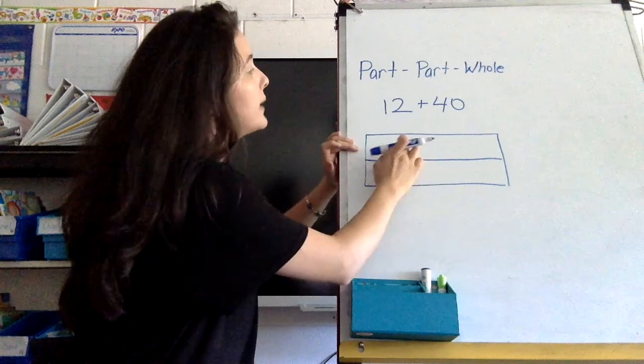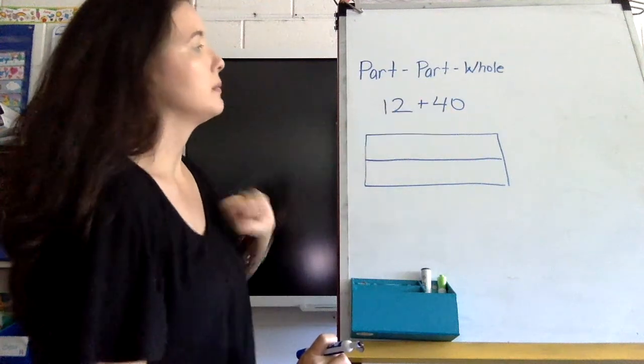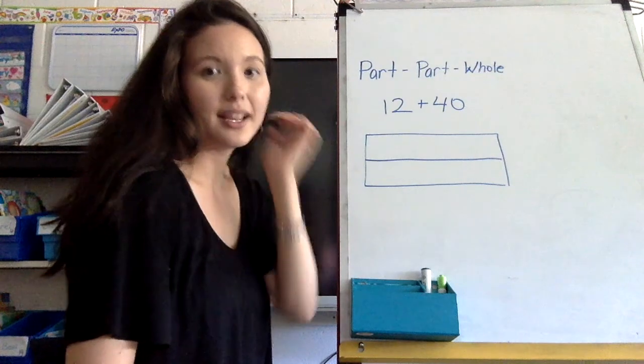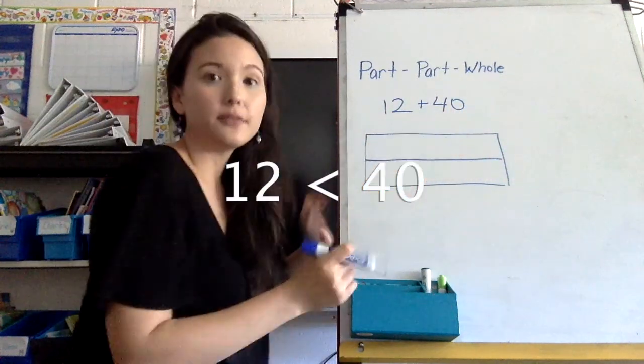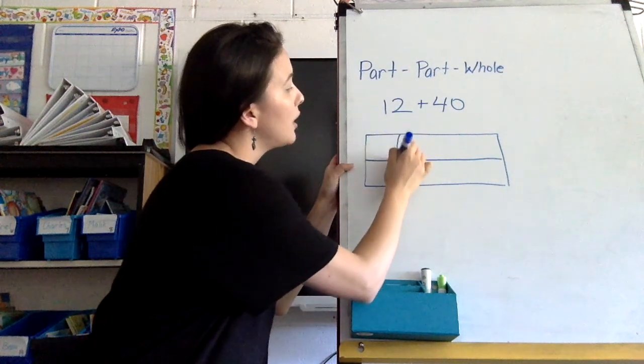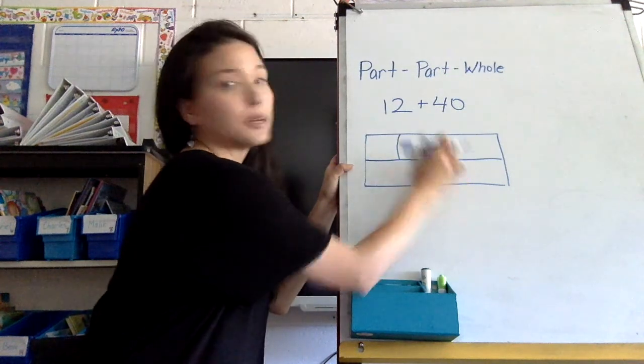So this side will be where my parts will go, and this will be where my whole is. I don't know the answer yet, I don't know the whole, but I do know my parts. I know I have 12 and I have 40. Which one is smaller than the other? You should know that the 12 is smaller than the 40.